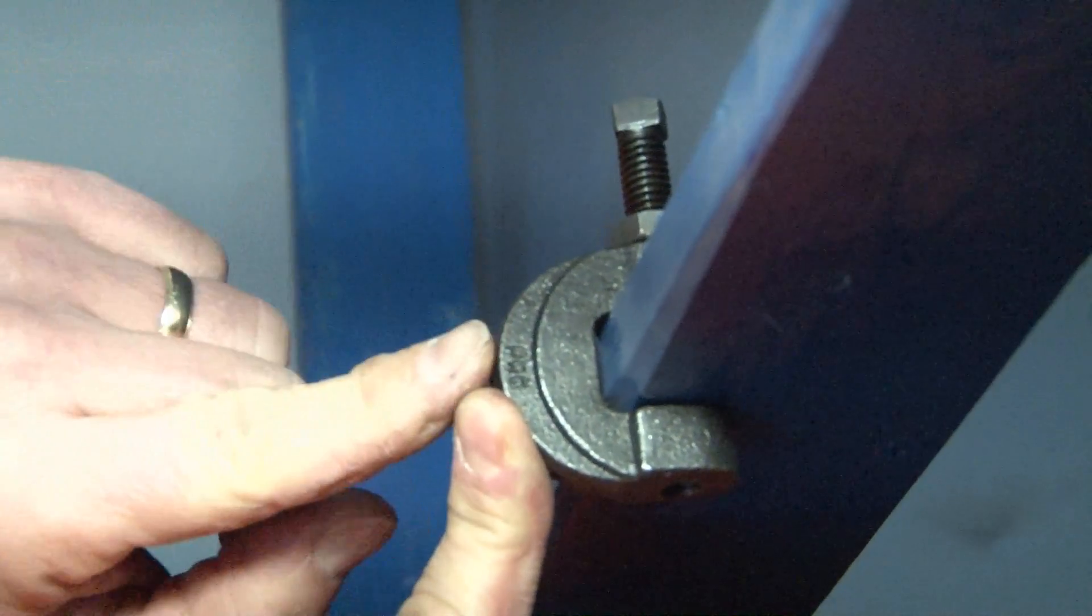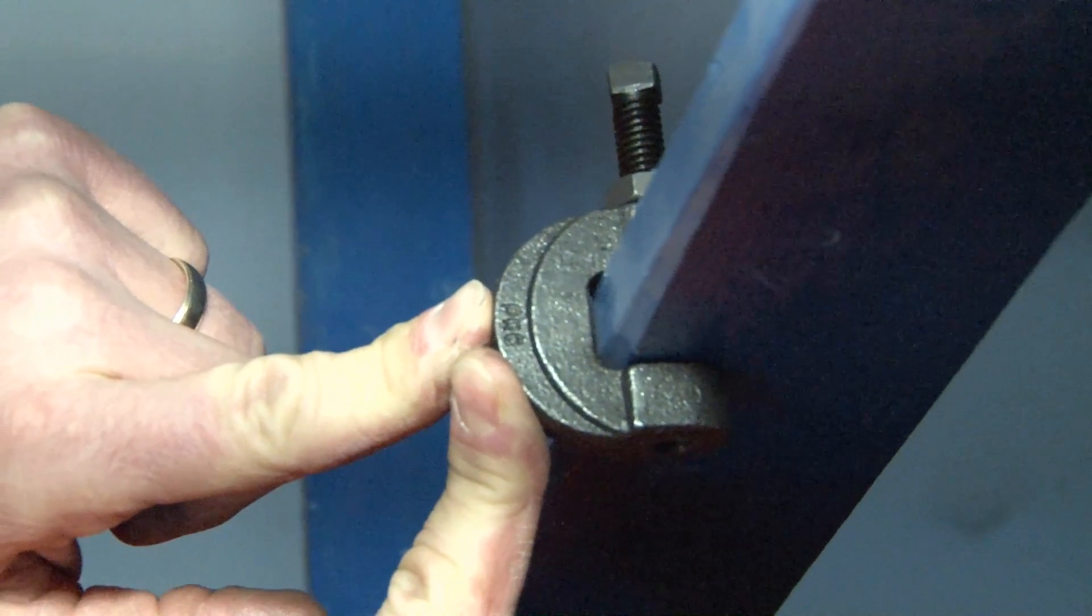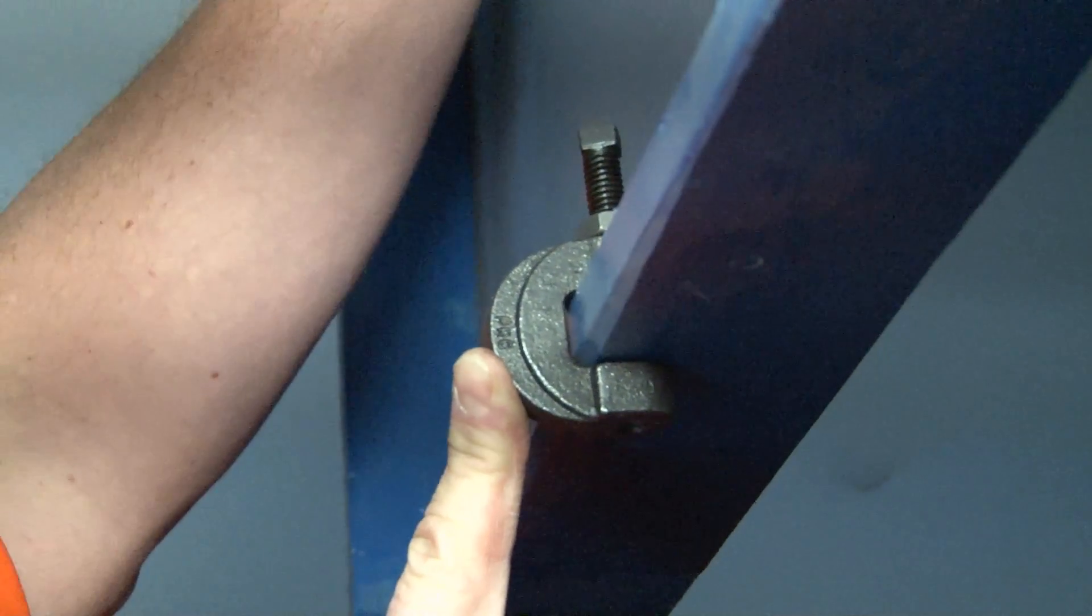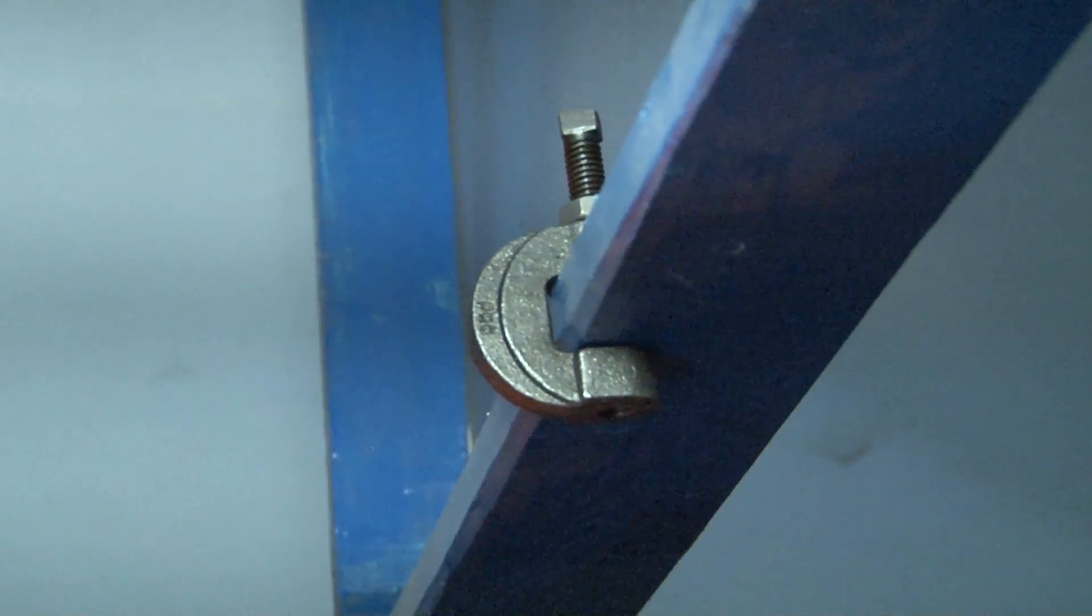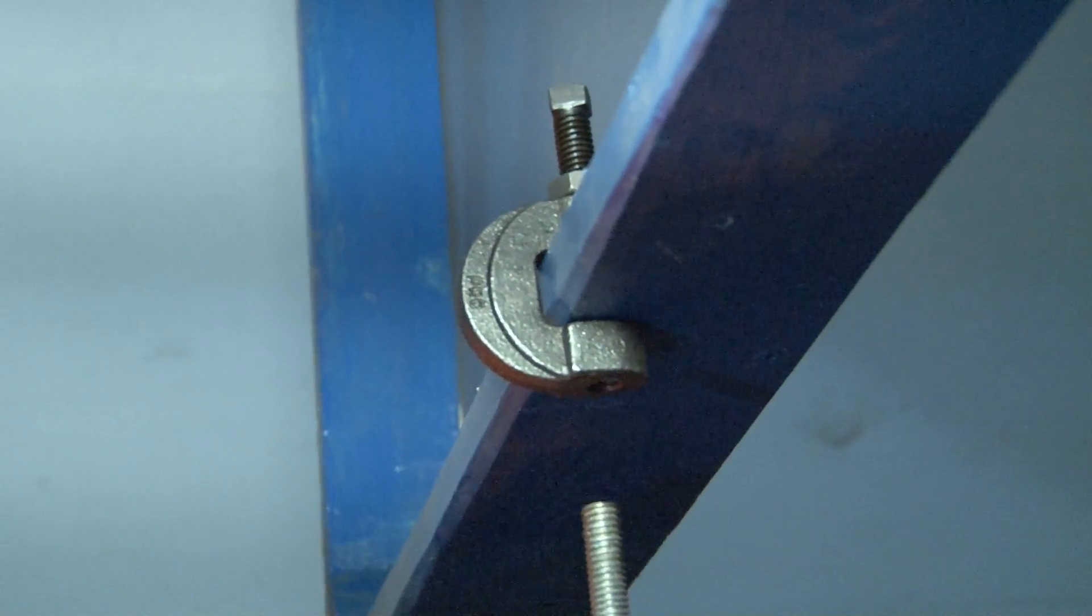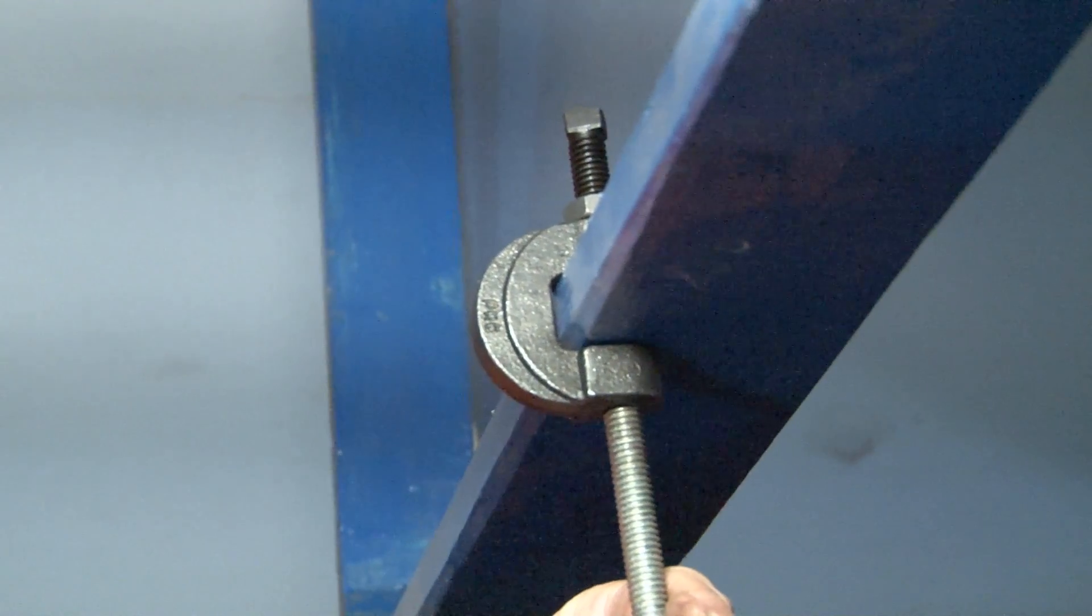This helps prevent any vibratory loosening that may occur with foundation or building shifting. At this point you're ready to take your three-eighths inch, half-inch, five-eighths inch, or three-quarter inch threaded rod and align it with the threaded hole in the bottom of the clamp.